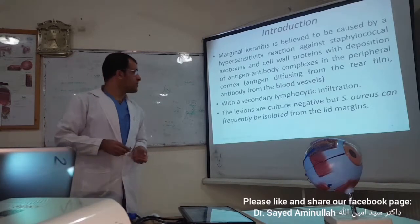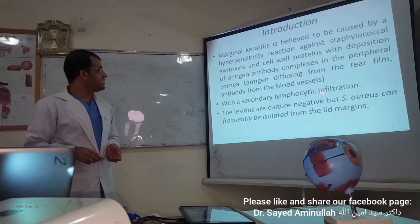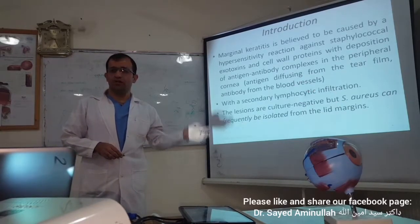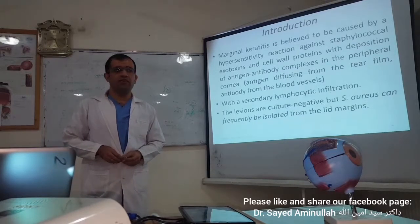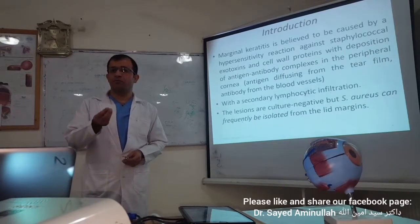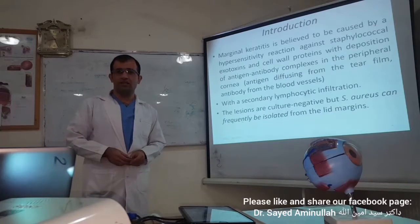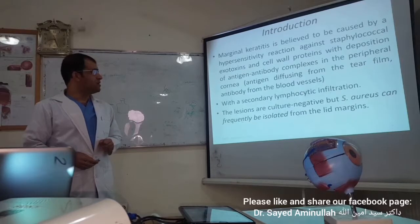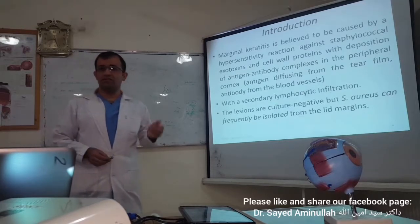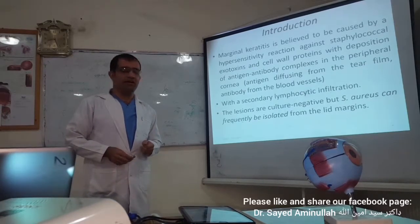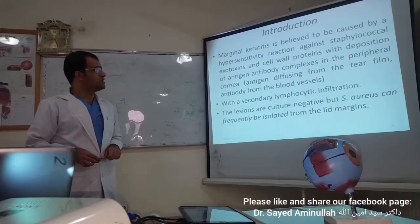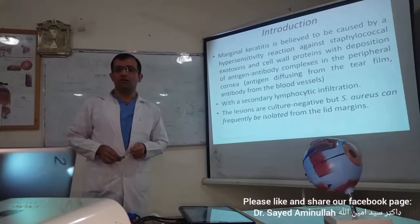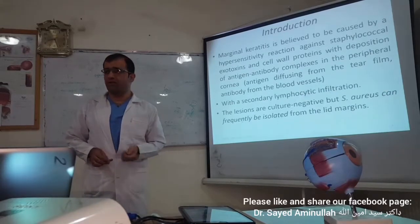We also see lymphocytic infiltration. These lymphocytes migrate to the peripheral cornea, producing the typical appearance of marginal infiltrates. The corneal infiltrates are seen there, but still the exact cause is not completely clear. Most patients will also be seen to have chronic blepharitis, specifically staphylococcal blepharitis.